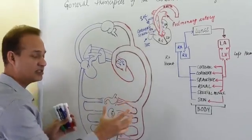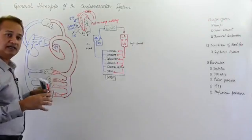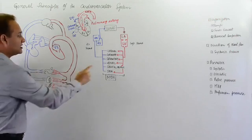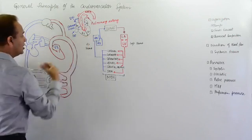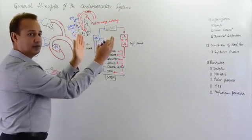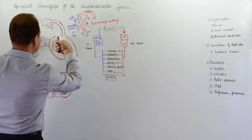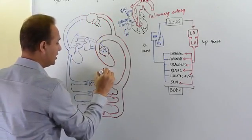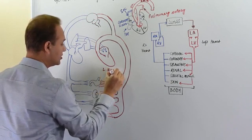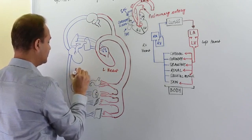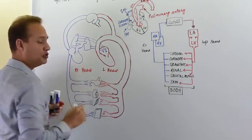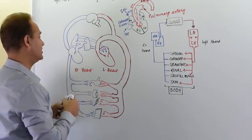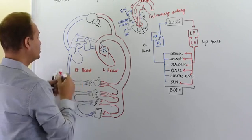To understand the heart as a two-pump system, I've broken the heart into two separate functional units: the left heart and the right heart. Let's trace the blood flow through this system, starting from the lungs.